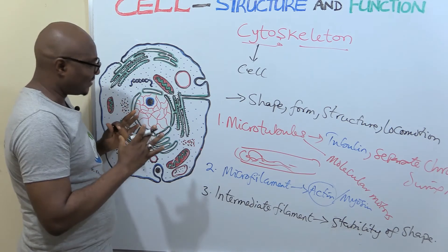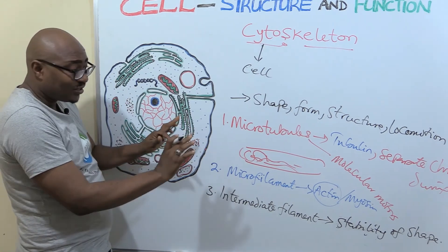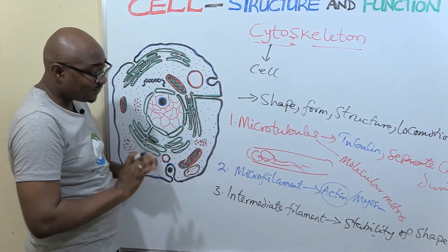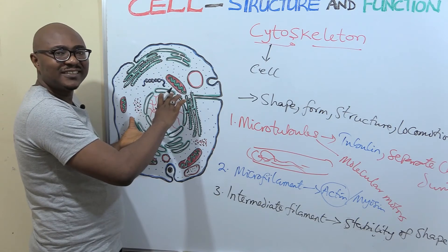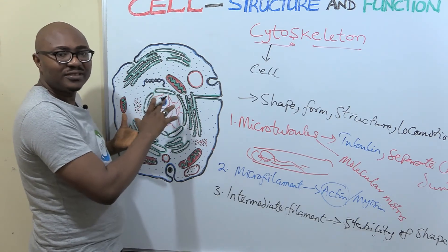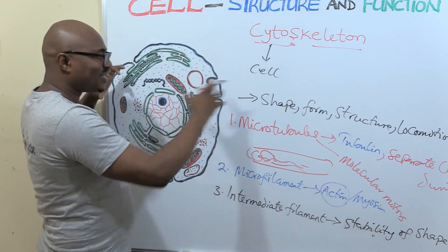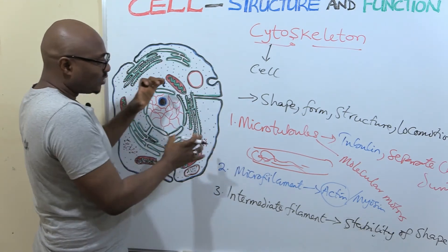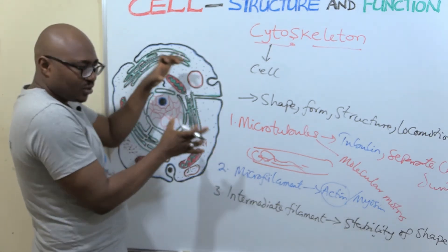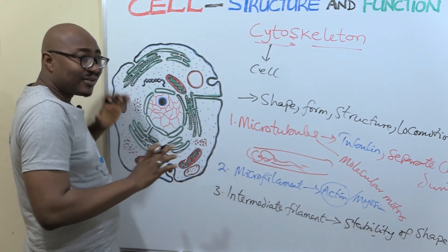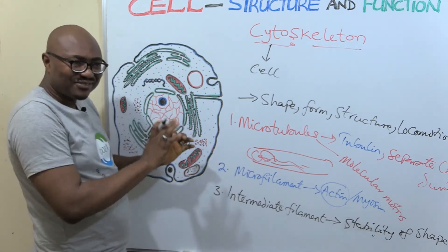So it helps to anchor. Don't forget all these functions. Remember them very carefully. Stability of shape and anchoring of the nucleus, and other parts of the cell that need it. Cells that are connected to each other, those points where they are connected to each other, intermediate filaments help to anchor them. Everything about it is stability of position, shape, and all of that.